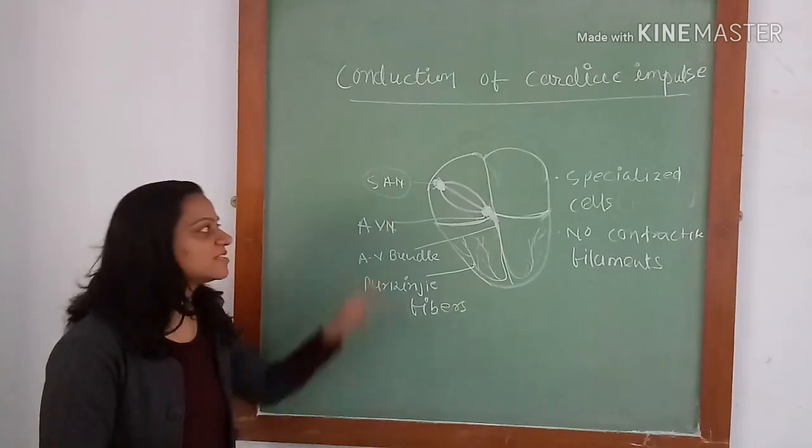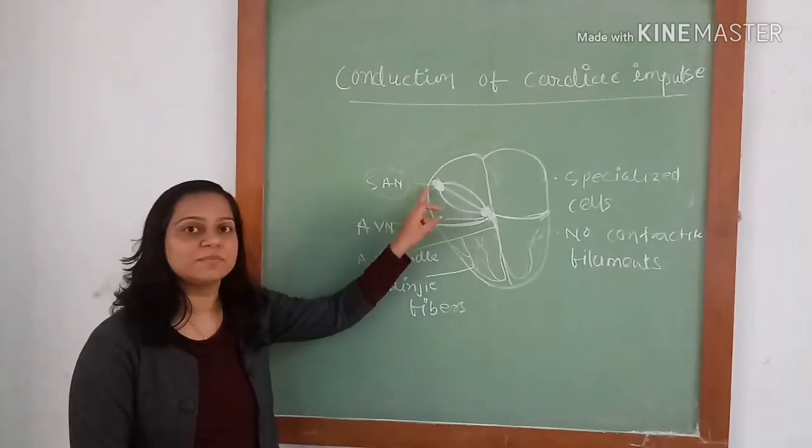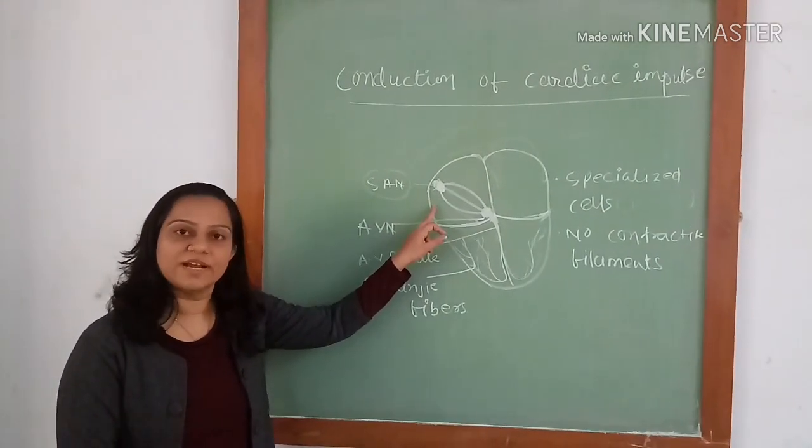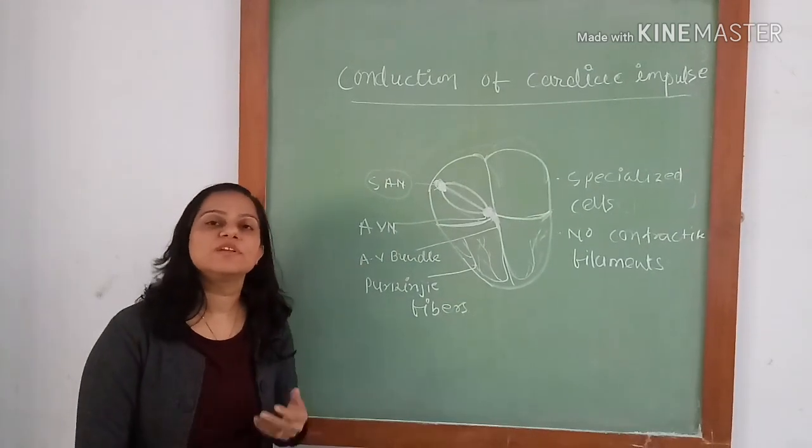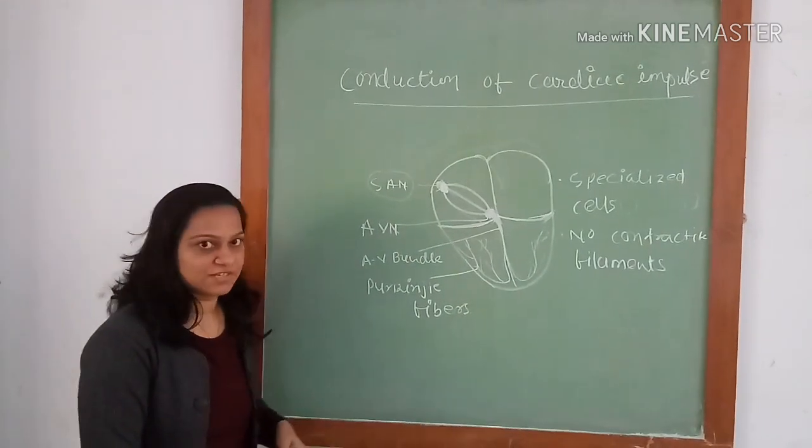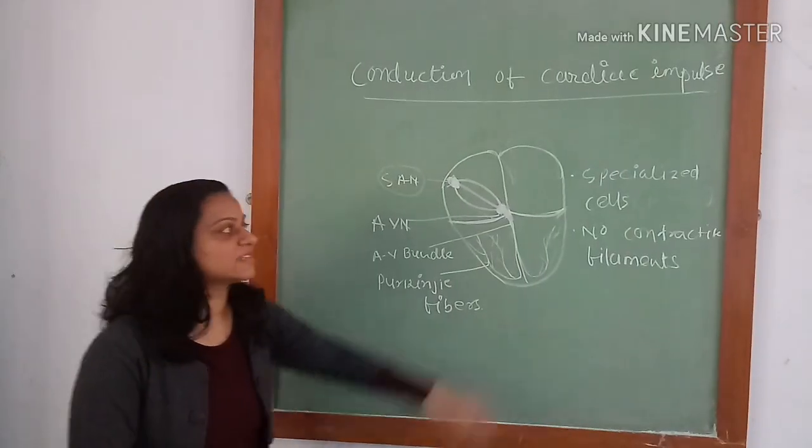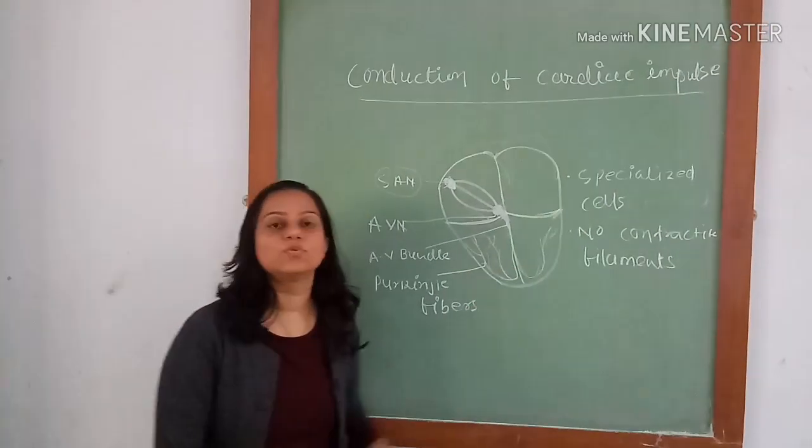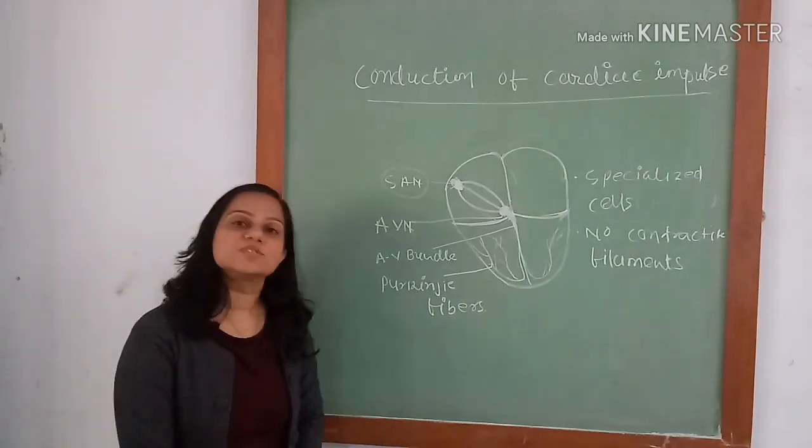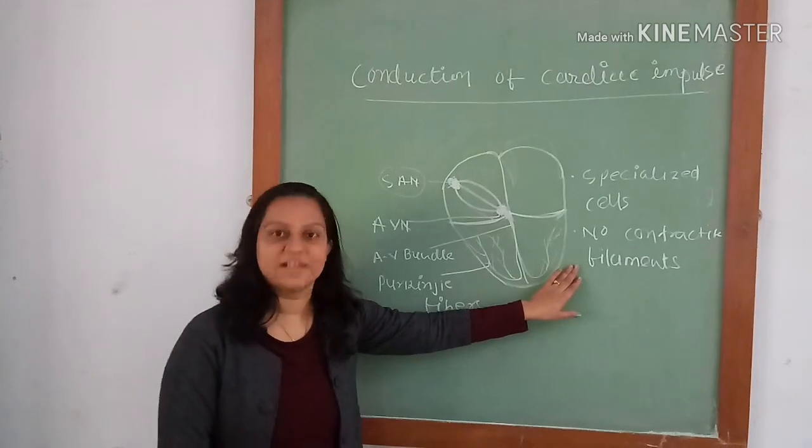SA node is a small flattened muscle strip located in the superior posterolateral wall of right atrium. SA node has specialized cells known as pacemaker cells. It does not have any contractile filaments.